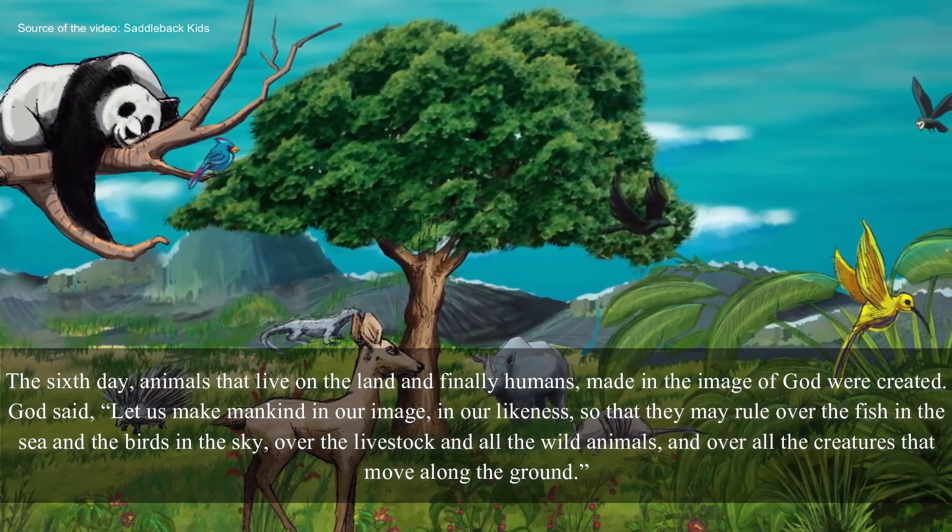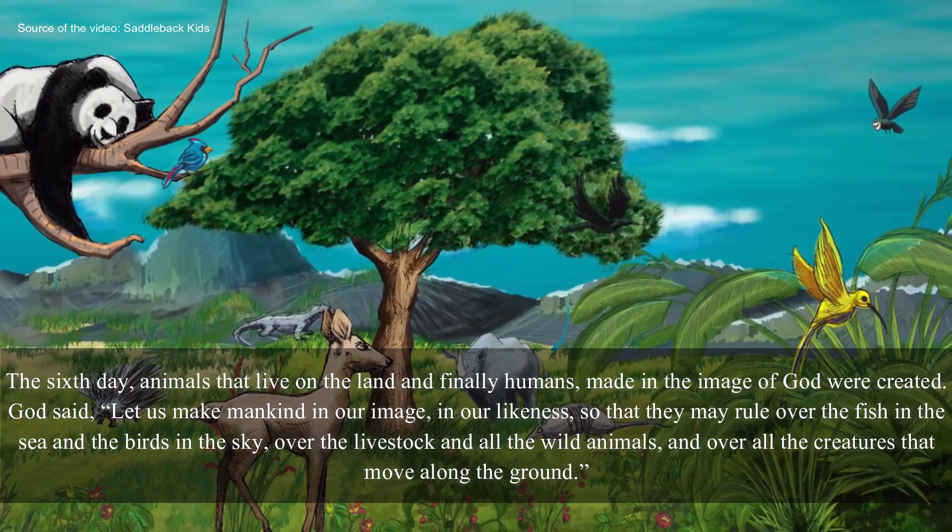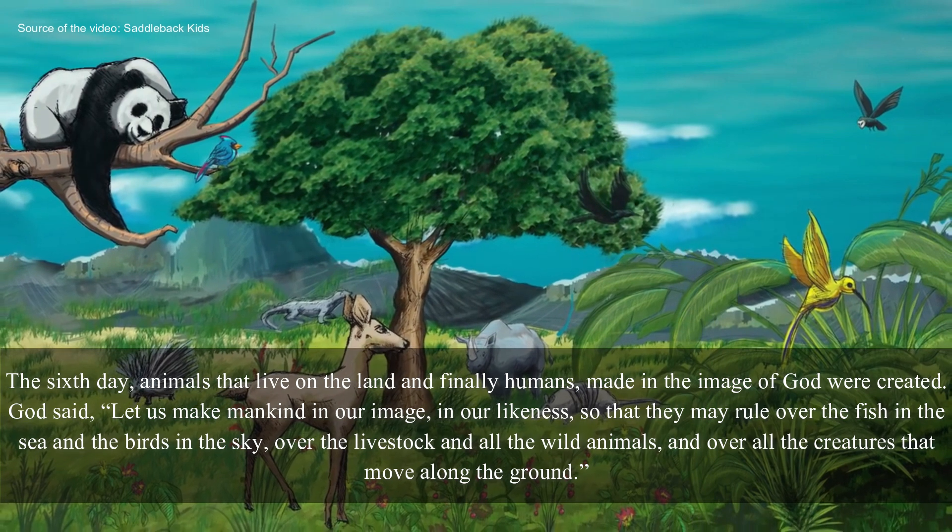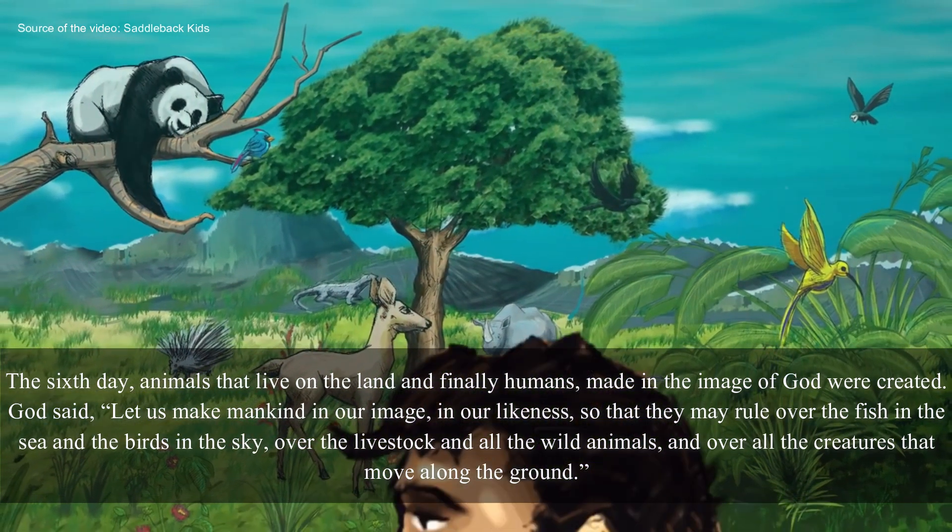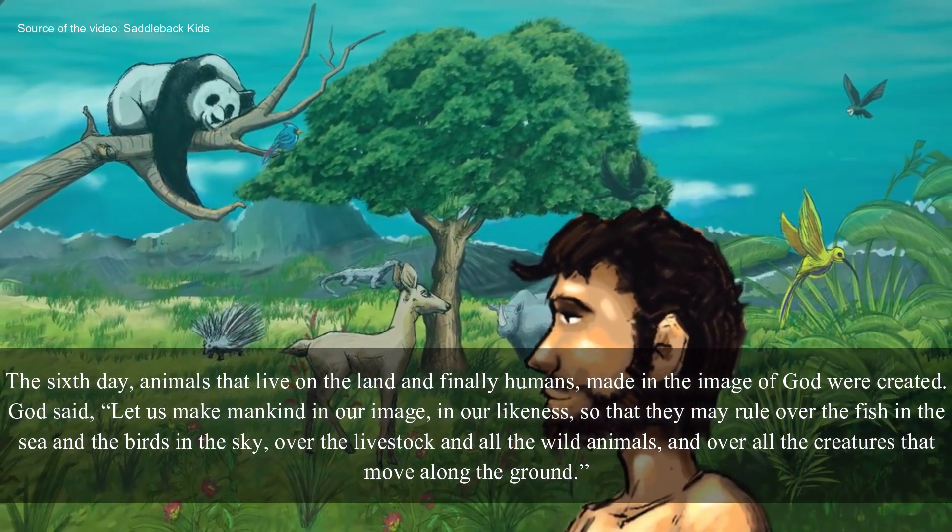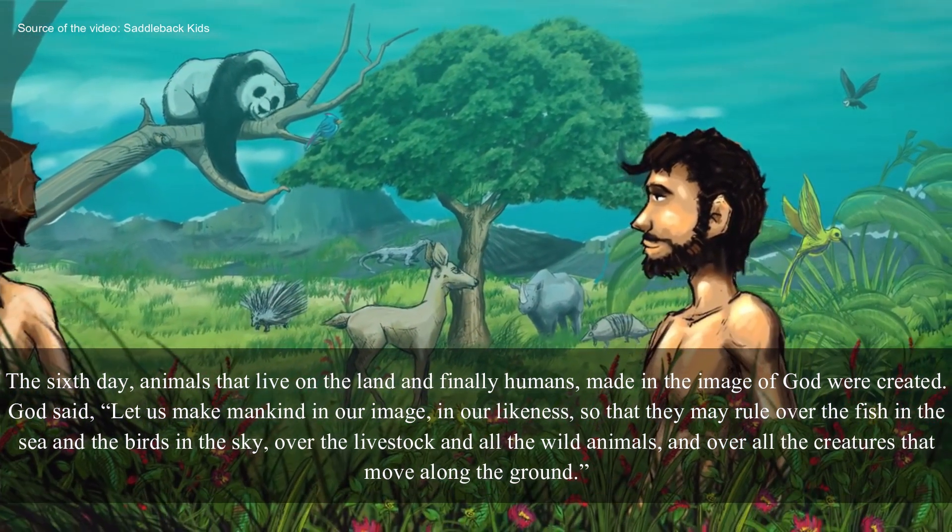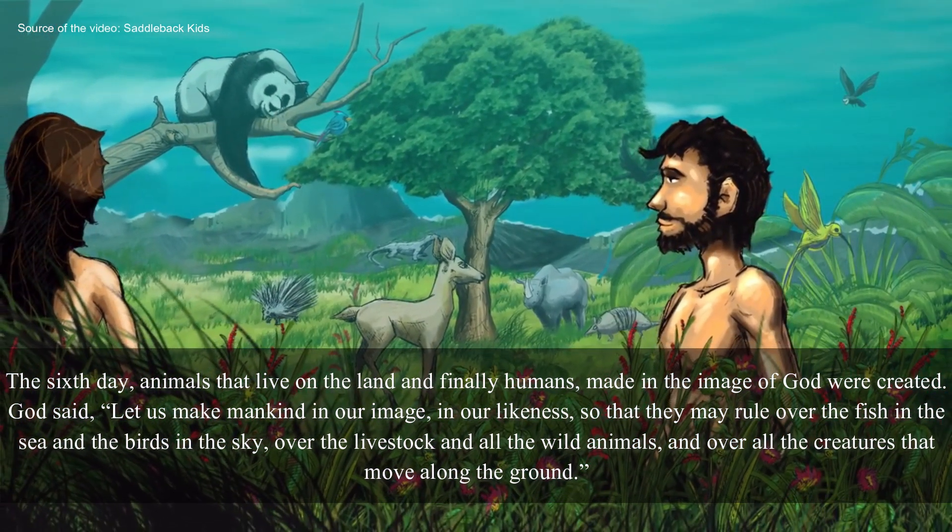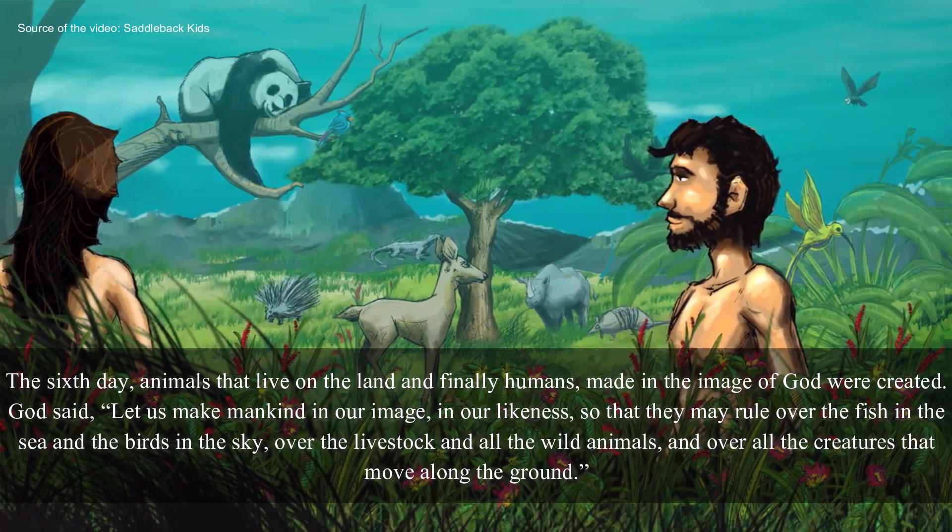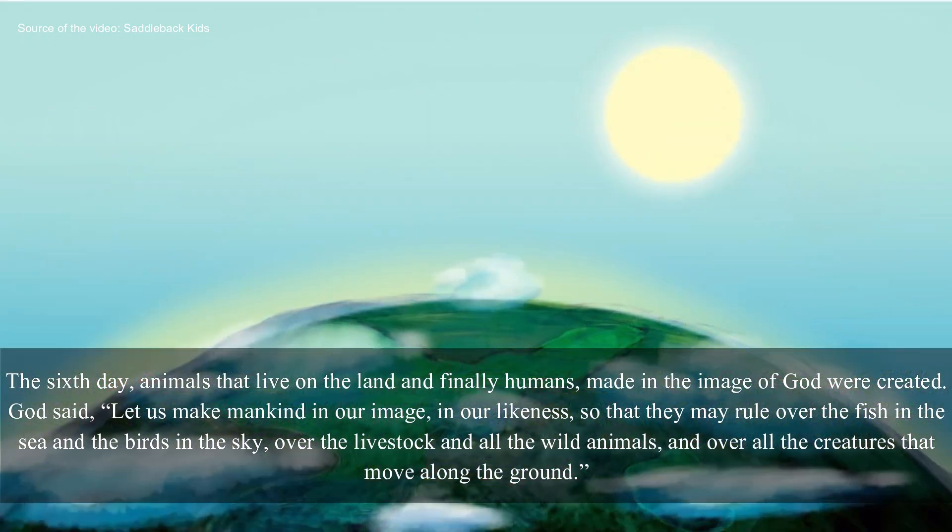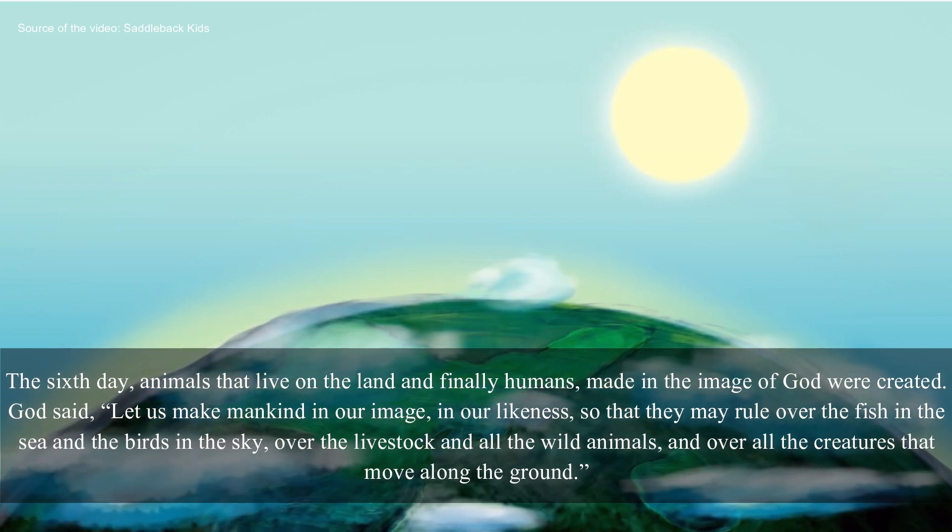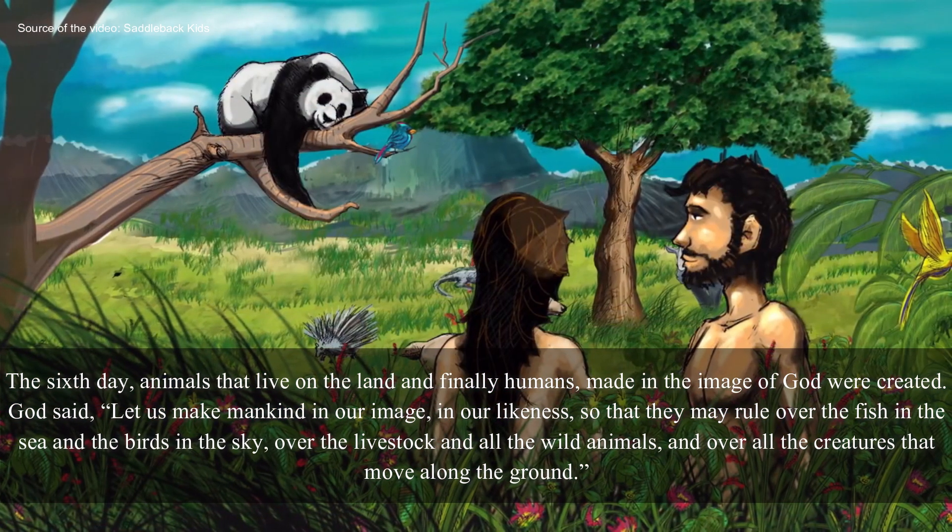The sixth day, animals that live on the land, and finally humans, made in the image of God were created. God said, Let us make mankind in our image, in our likeness, so that they may rule over the fish in the sea, and the birds in the sky, over the livestock and all the wild animals, and over all the creatures that move along the ground.